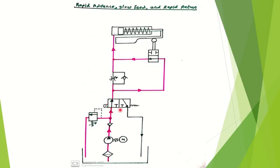There is also a 2/2 direction control valve. Its function is either to allow the fluid or, when the blocking position comes into contact with the circuit, to block the fluid. The components of this hydraulic circuit are: tank, hydraulic oil, suction strainer, pump, motor, check valve, pressure relief valve, 3/2 direction control valve, flow control valve, 2/2 direction control valve, cam, and a single acting cylinder.